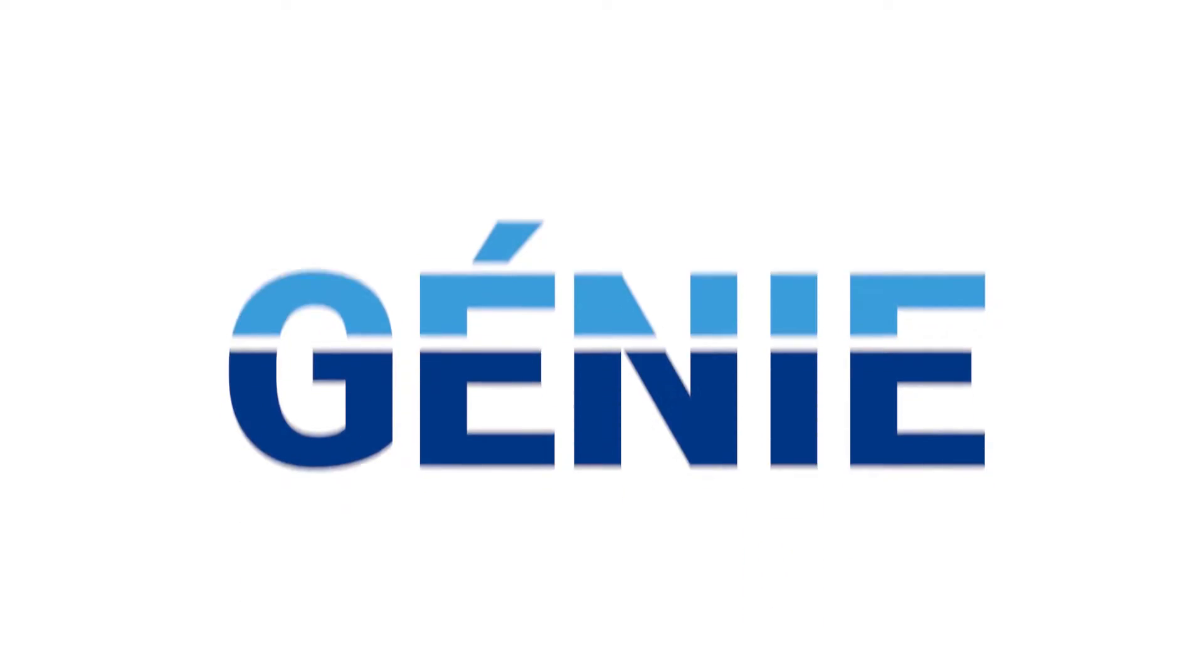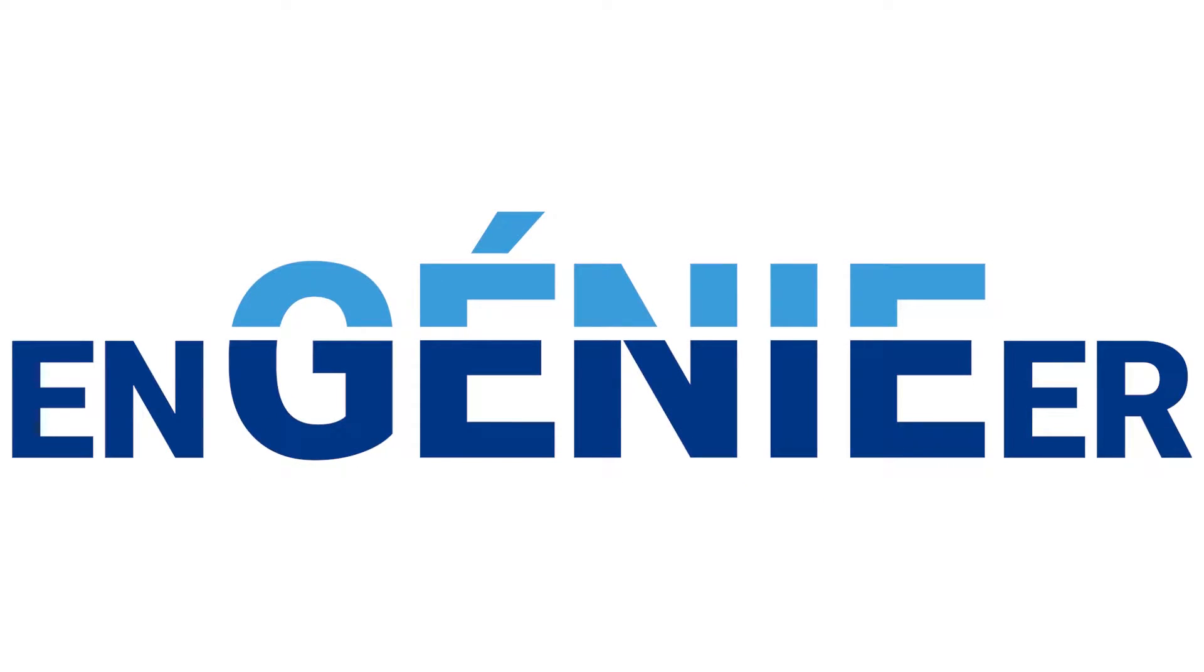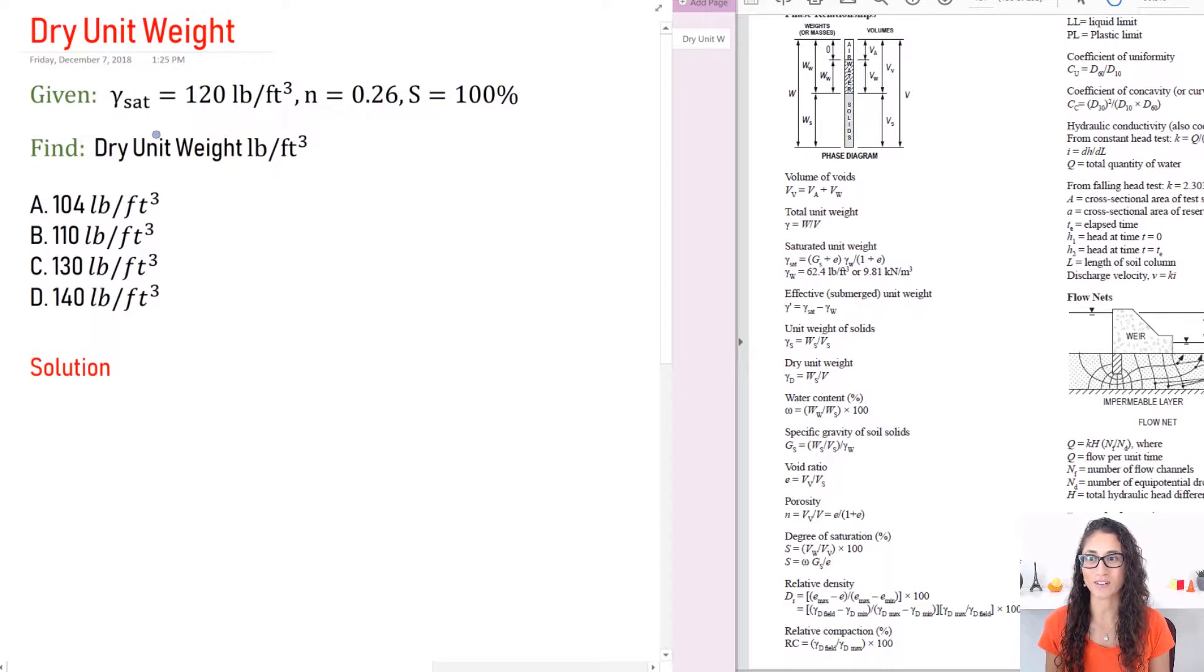Now let's get started! Okay, so we have saturated unit weight which is 120 pounds per cubic feet. The porosity is 0.26 and the saturation is 100%. That means our soil is 100% saturated. This is very important to keep in mind. I'm going to show you why we're going to use this to be able to solve this problem.